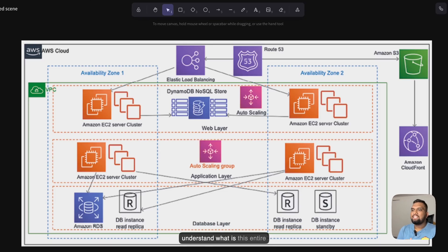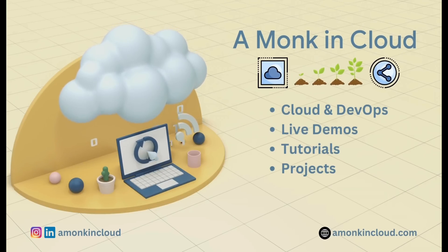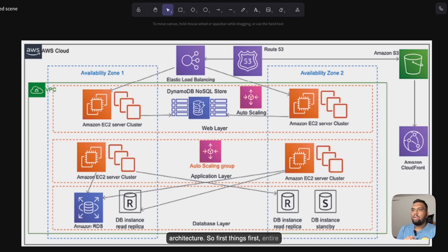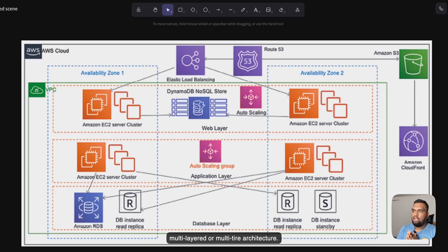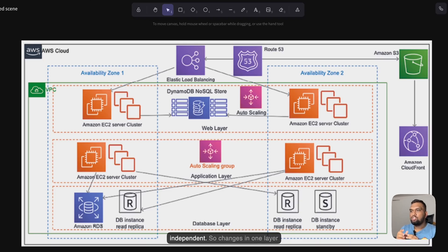So first, let's understand what this architecture is. N-tier architecture, also called multi-layered or multi-tiered architecture, is about separating your application into multiple logical layers — like presentation, business logic, data access, and service layers. The big idea here is loose coupling. Each layer is designed to be independent, so changes in one layer do not break the others, and each layer can be scaled individually based on the traffic or demand.